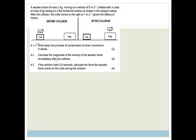Now it says calculate the magnitude of the velocity of the wooden block, this velocity, immediately after the collision. So we've got this guy and we've got this guy. So here's a wooden block. We're going to say block, call him B, and C for crate. Now, what do we know?